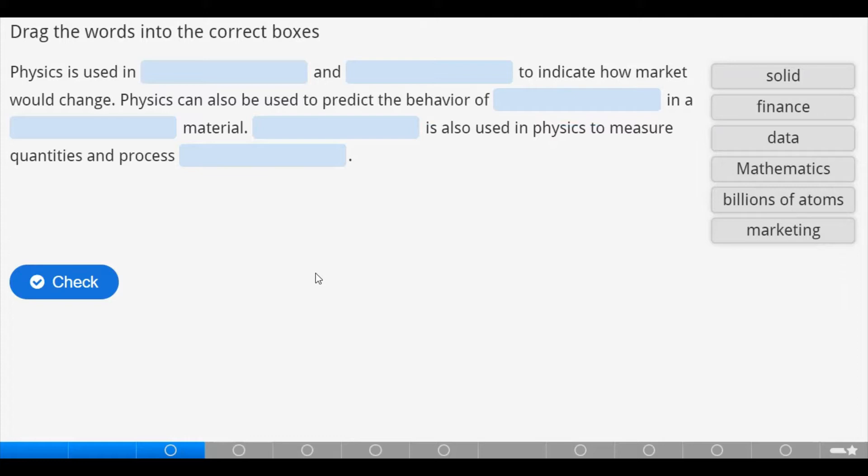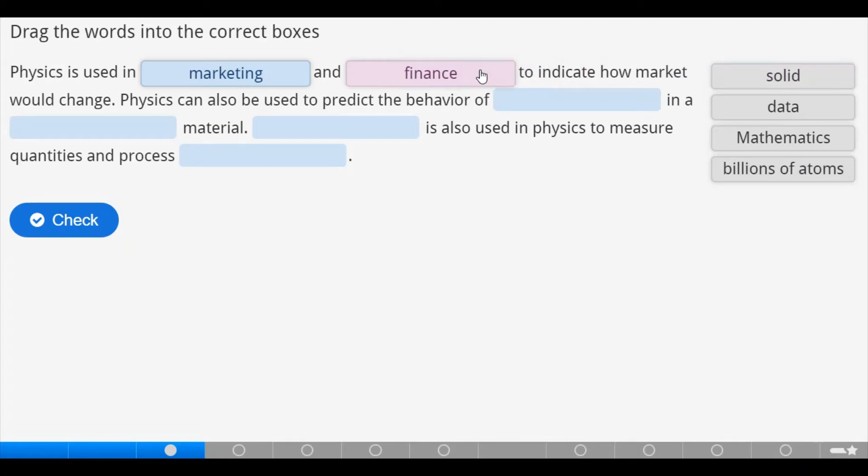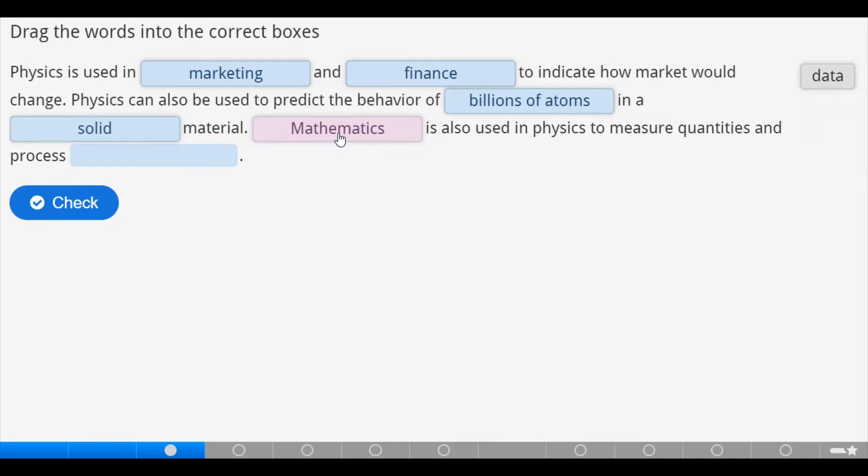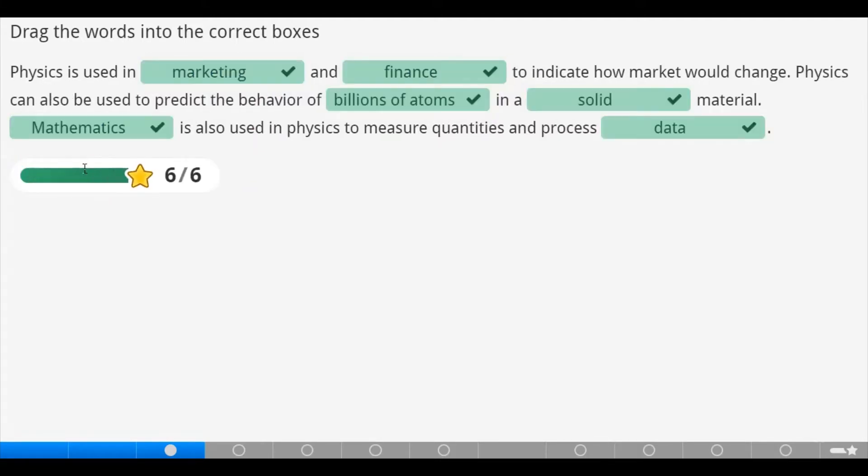So we have to drag the following words into the correct boxes to give us a full definition of what the importance of physics is. Physics is used in marketing and finance to indicate how markets will change. Physics can also be used to predict the behavior of billions of atoms in a solid material. Mathematics is also used in physics to measure quantities and process data. Let's check. That's correct. Let's move on.